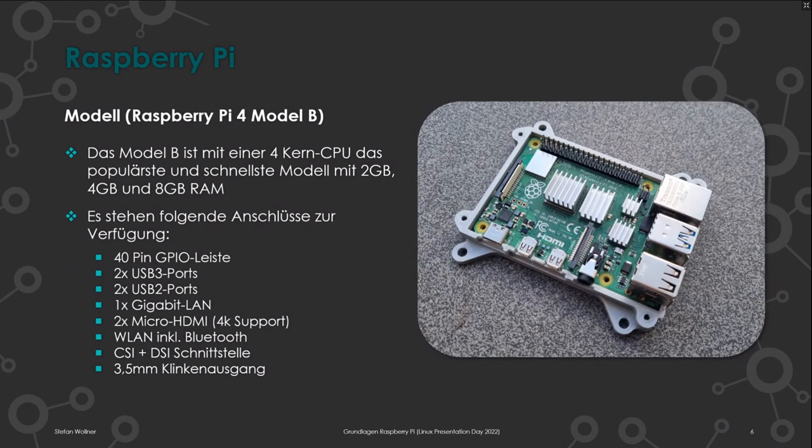Der HDMI-Ausgang beim Raspberry Pi 4 sind in dem Fall zwei Stück als Mikro-HDMI – das heißt, man braucht bei einem normalen Kabel einen Adapter. Dafür hat man zweimal 4K-Bildausgabe mit 30 Hz oder, wenn man nur einen Bildschirm anschließt, 4K mit 60 Hz. Er hat WLAN und Bluetooth, CSI- und DSI-Schnittstelle sowie einen 3,5-Zoll-Klinkenausgang für Soundausgabe, falls man nicht HDMI nutzt.